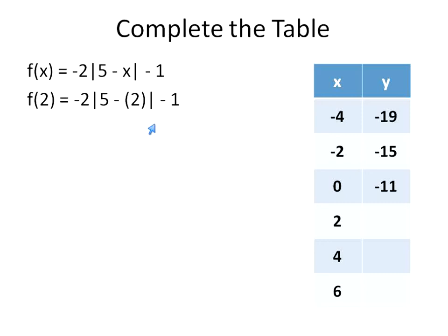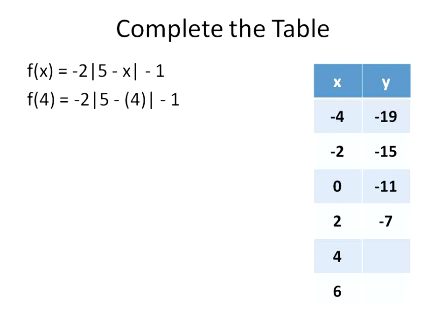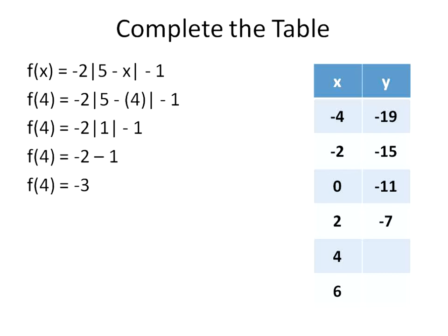Now plugging in positive 2: 5 minus 2 is 3. The absolute value of positive 3 is positive 3. Positive 3 times negative 2 is negative 6, minus 1 is negative 7. For f(4): negative 2 times the absolute value of 5 minus 4 — that's negative 2 times 1 — gives negative 2, minus 1 is negative 3. So our y values so far are negative 19, negative 15, negative 11, negative 7, negative 3 — we have a pattern here.